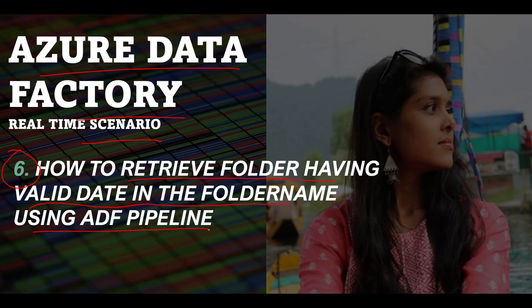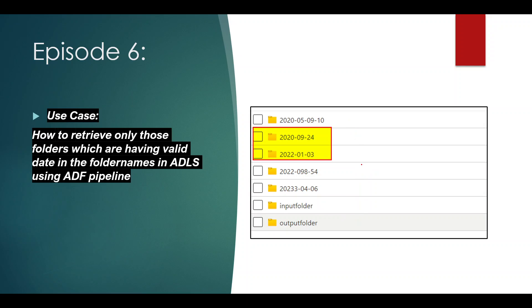Let's see the requirement in detail. We have a container in the ADLS account — that is the Azure Data Lake Storage account — where we have folders in various formats. Some folder names are in string format like 'input folder' or 'output folder', some have number values separated by hyphens that are not proper dates, and some folders have names in a valid date format. We want to retrieve only those folders which have a valid date in their folder name.